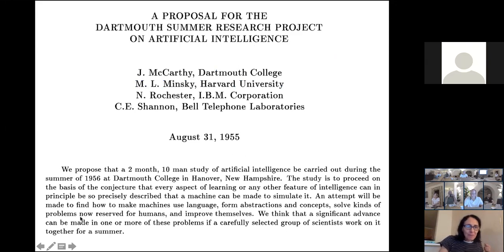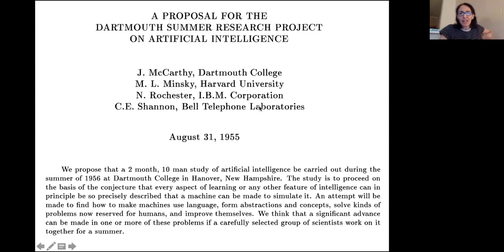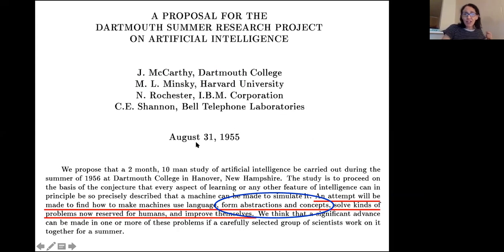Back in 1955, McCarthy et al. wrote a proposal for the famous Dartmouth Summer Research Project, in which the participants were supposed to solve certain problems in AI such as using language, forming abstractions and concepts — which is the topic of this talk — and other kinds of problems in AI which still remain largely open, but this one in particular is of great interest today.